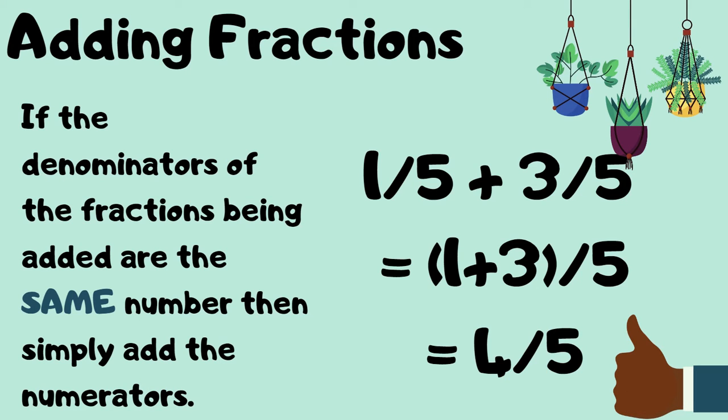Now, if the denominators of the fractions being added are the same number, then you simply add the numerators and keep the denominator. So you would say 1 over 5 plus 3 over 5 is 1 plus 3 over 5, and that will give you 4 fifths.